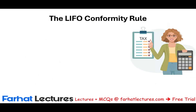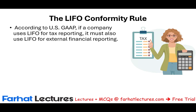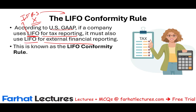Let's start by revisiting the LIFO conformity rule. According to US GAAP, if a company uses LIFO — and note that IFRS does not allow LIFO, viewing it as a gimmick, which is one of the differences between US GAAP and IFRS — if a company uses LIFO for tax reporting to save taxes when prices are rising, they must also use LIFO for external financial reporting. This is called the conformity rule.